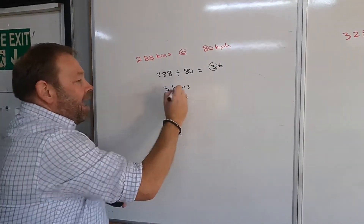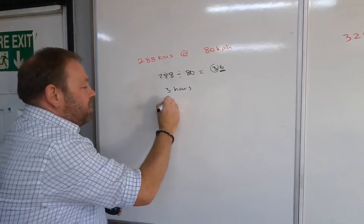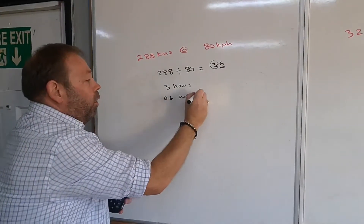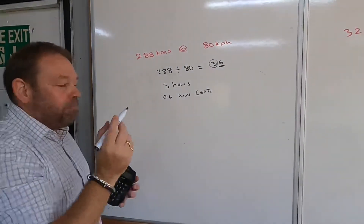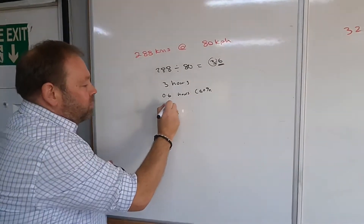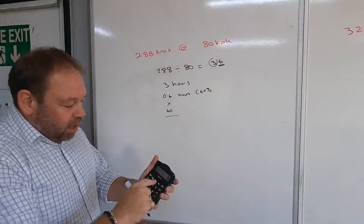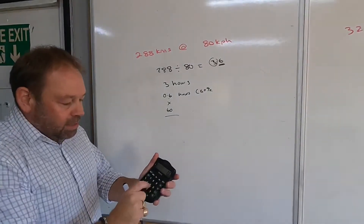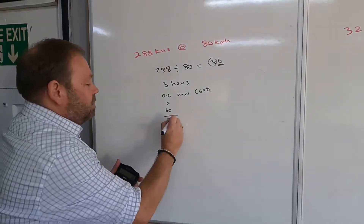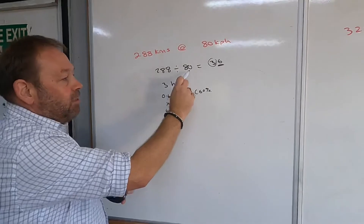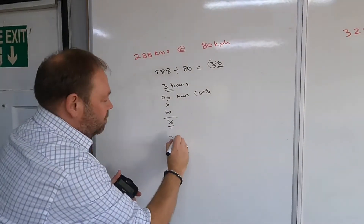On the calculator, 288 divided by 80 gives us 3.6. What does the 3.6 represent? The 3 is 3 complete hours. The 0.6 is 0.6 of an hour, or 60 percent of an hour. So we need to work out how many minutes that is — we take 0.6 and multiply it by 60, because there are 60 minutes in an hour, which gives us 36.